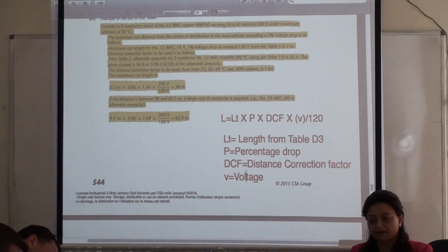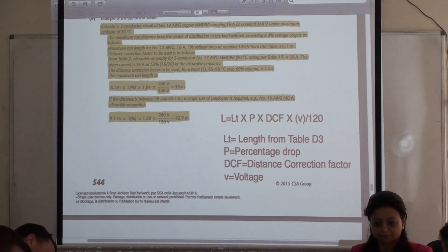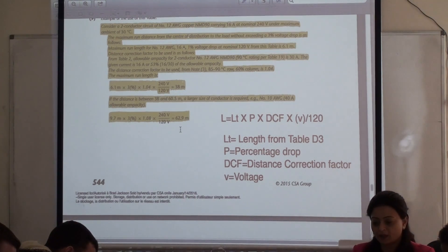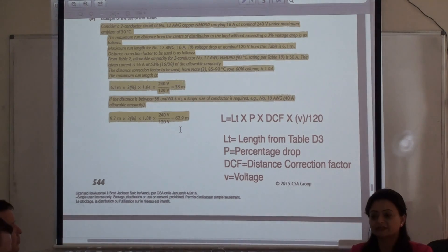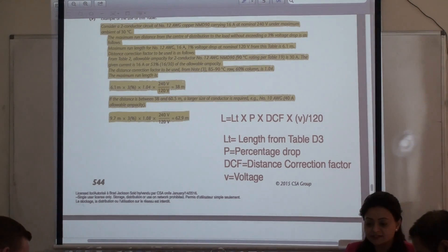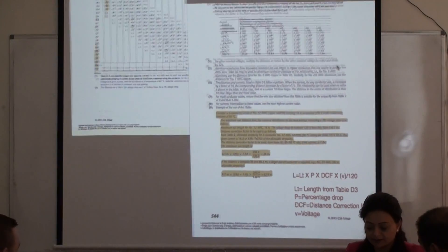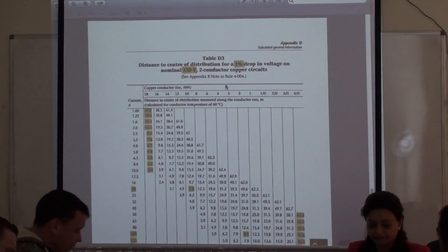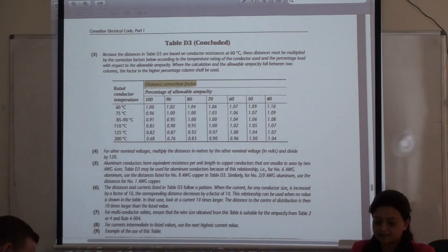Where is the DCF table? If you go up on that page, you will find the distance correction factor table. Highlight the heading of that table. Right here — if you go a little bit up on the chart, right here is the distance correction factor table.